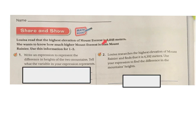So we know Mount Everest, but we don't know Rainier. So I can use an R as my variable for that. And if I'm looking at difference, remember difference means subtraction. So I'm going to say 8,848 minus the R for Rainier. And so you're going to make sure that you write R equals Mount Rainier in meters.